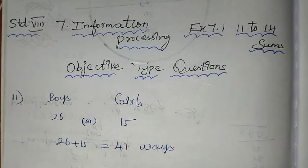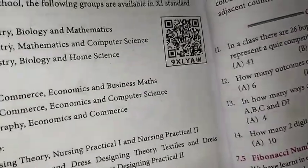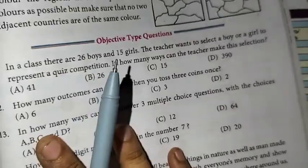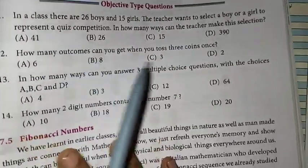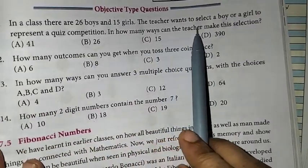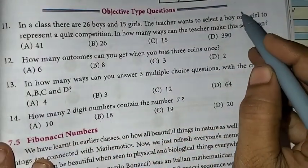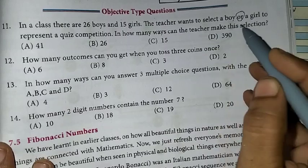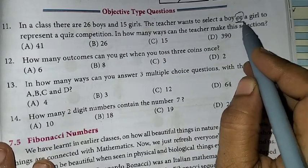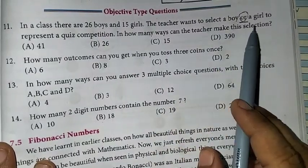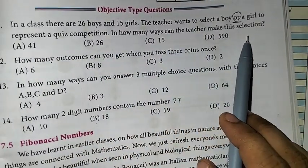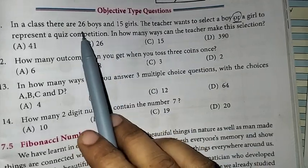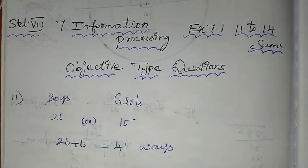The problem is: in a class there are 26 boys and 15 girls. The teacher wants to select a boy or a girl to represent a quiz competition. In how many ways can the teacher make this selection? Since it's boy OR girl, we add: 26 plus 15 is nothing but 41 ways.